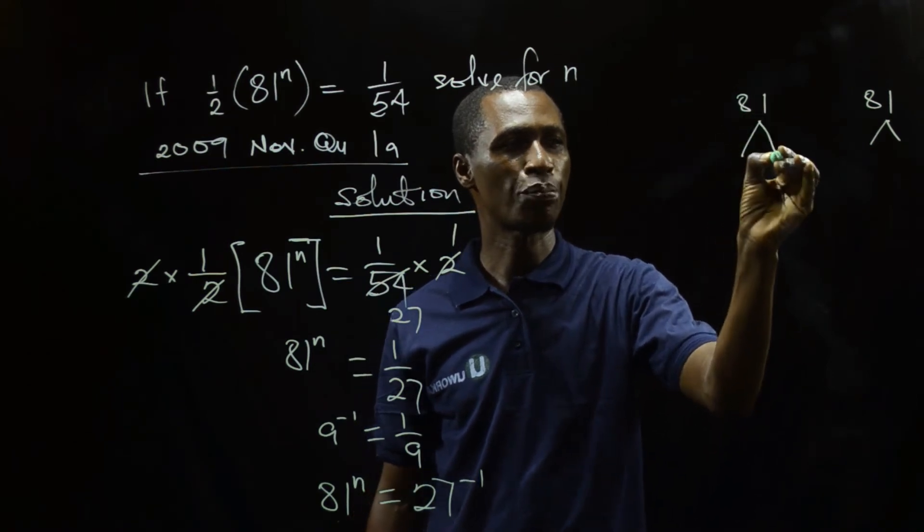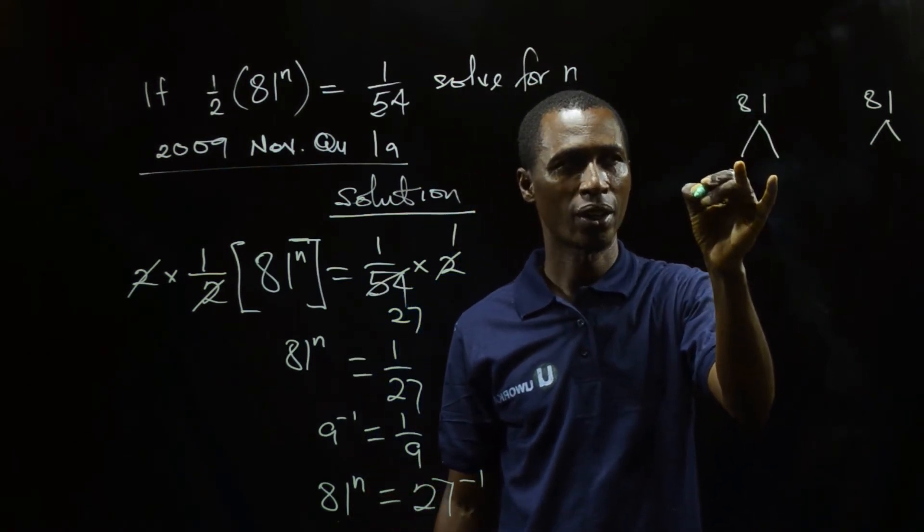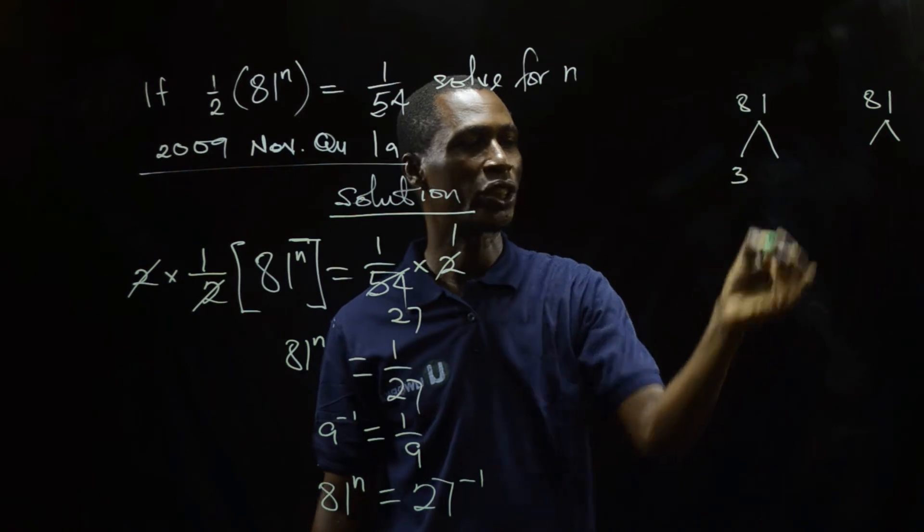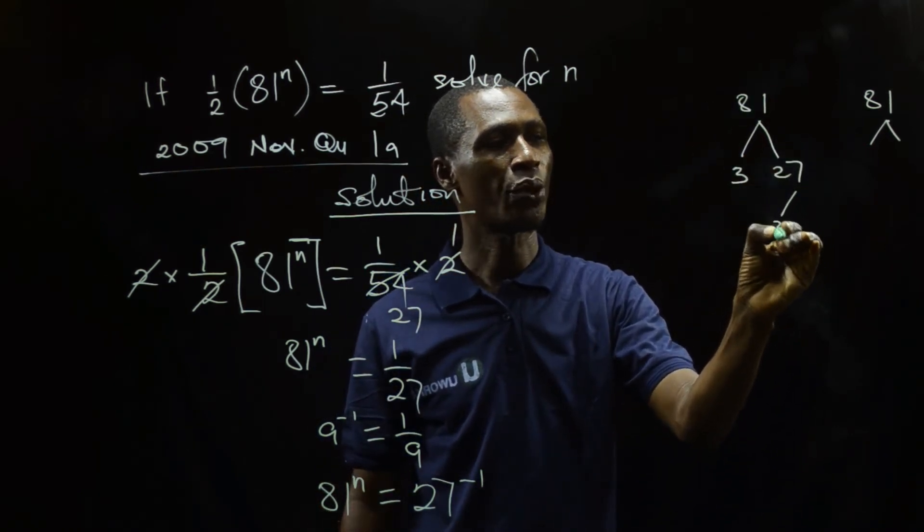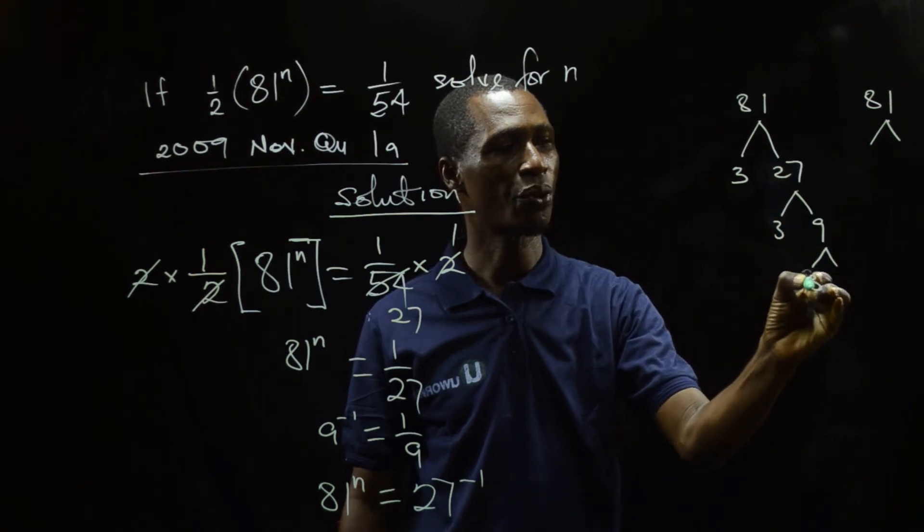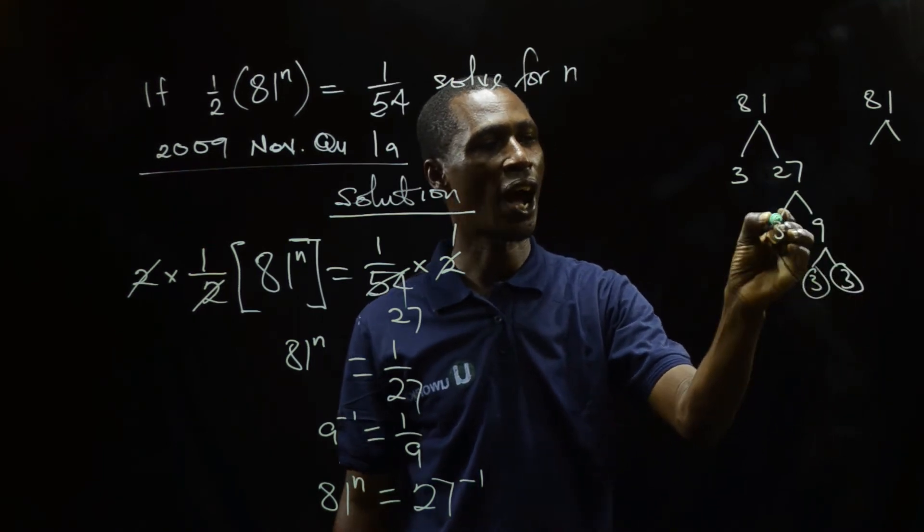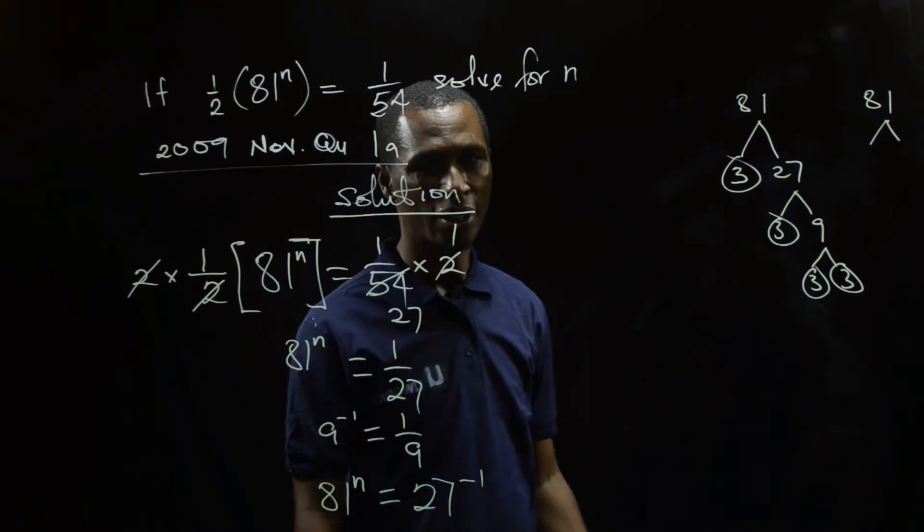So 81 is here. Base prime number that can go to 81. 3 can go to 81. And 3 will go to 81, giving 27. Then 3 will go to 27, giving 9. I have 3, 3. So these are my possible numbers.